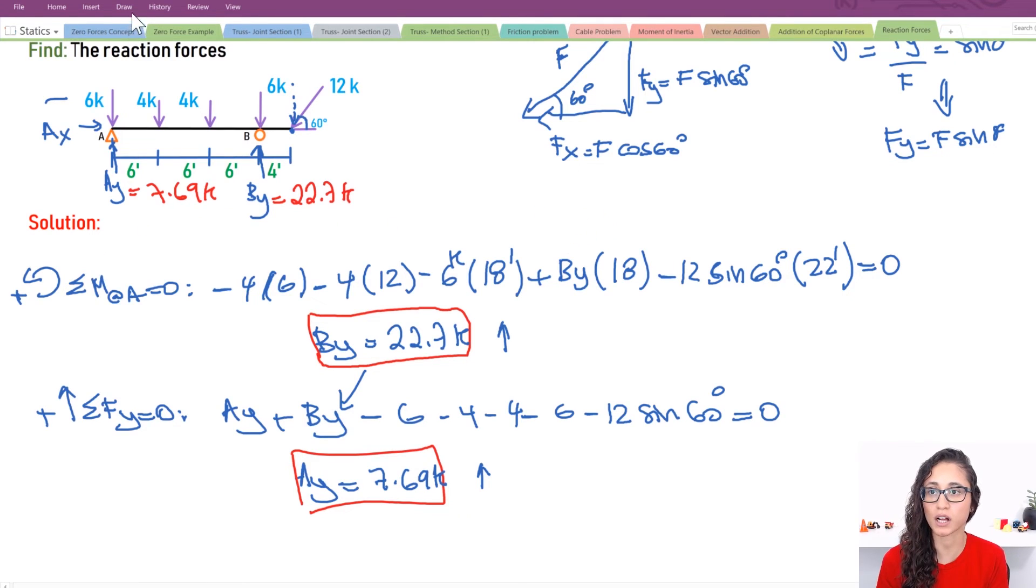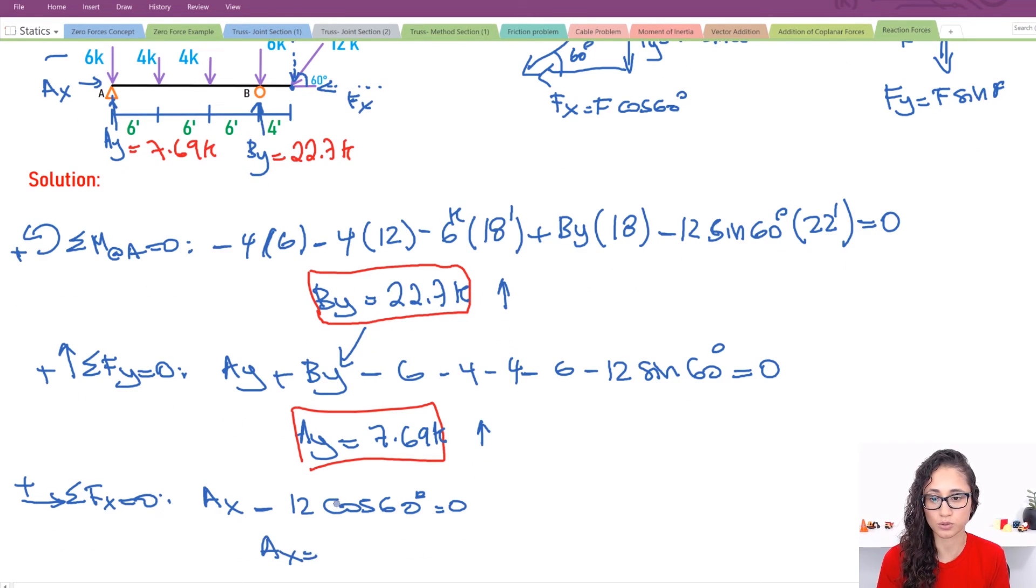Now, the last thing we need to calculate is the summation of the forces on the X equals to zero. So let's pick this to be our positive sign. So what do I have? I have Ax, and I have minus this component right here, the Fx. So I have minus 12 cosine 60 equals to zero. So Ax is equal to 6 kips. And this is also positive. So which means it's going to be going this direction.